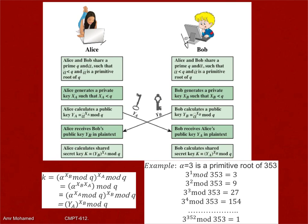Bob on the other side does the same — it's a symmetric algorithm. Bob will also generate locally XB, then calculate YB and share it. The idea is that if you take YB and calculate YB to the exponent XA, which is only known locally, you get a certain value. It happens that at Bob's side, when Bob receives YA and does the same, the answer is the same value.